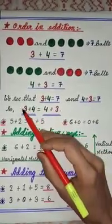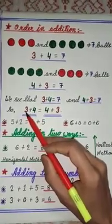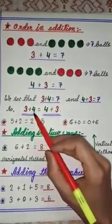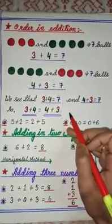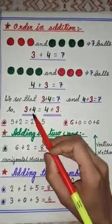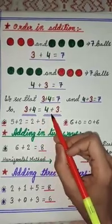We can change the order of numbers. Here I have placed 3 first and 4 later on. Here 4 is placed first and 3 is placed later on. So the answer remains the same.